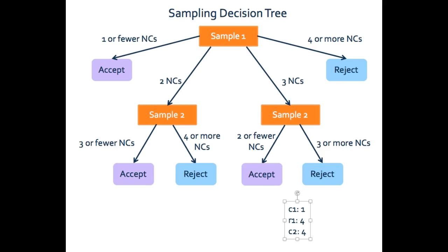So first let's take a look at our decision tree for a sampling situation — this is the one that's in your notes. We have our accept/reject criteria where on our first sample our acceptance criteria is one. So if on our first sample we get one or fewer nonconformities we can accept. Our first sampling rejection criteria is four, so if we have four or more nonconforming units in our first sample we have to reject. We also have two situations where we can't make an accept/reject decision right away because they fall between our accept and reject criteria — that's where we need to take our second sample.